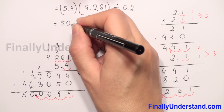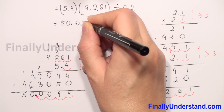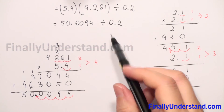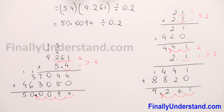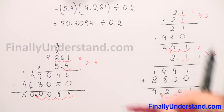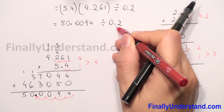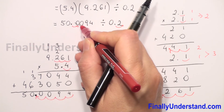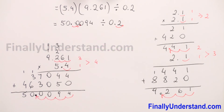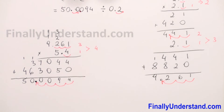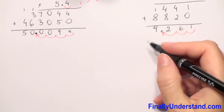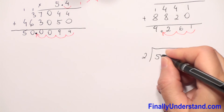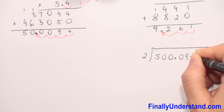So we have 50.0094 and we have to divide by 0.2. For division of decimal numbers, the divisor must be a whole number. We move the decimal point one place to make 0.2 into 2. Whatever we did with the divisor we do the same with the dividend, so 50.0094 becomes 500.094. Now we will set up long division: divisor is 2, and we divide 500.094.